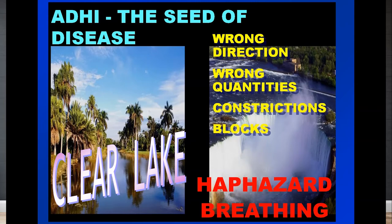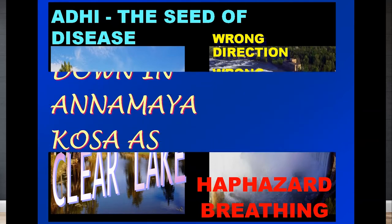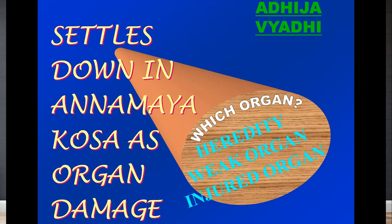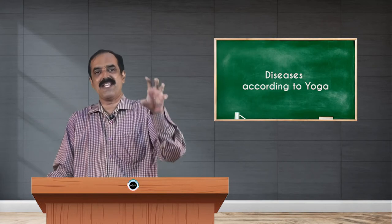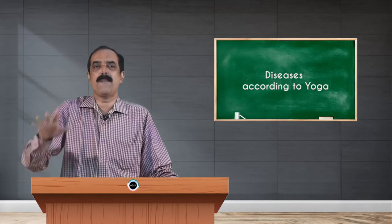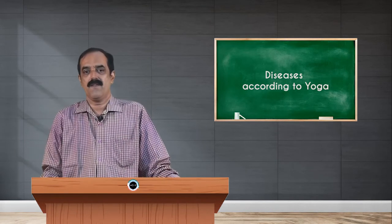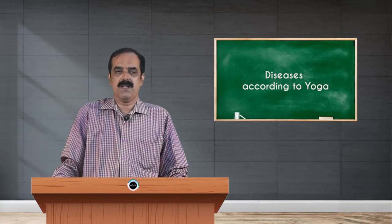The seed of the disease is disturbed wrong direction, wrong quantities, constrictions, blocks, haphazard breathing. These are all leads to the adhis. So that's why it is not that everyone will get a disease. See stress will cause to everyone. Question may come to your mind, being a student, why only these people? So many other reasons are there for that. See one person is stressed up means, ten persons will be stressed up, five people will get diabetes, five people may get hypertension, not all.